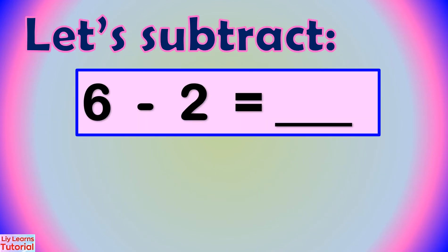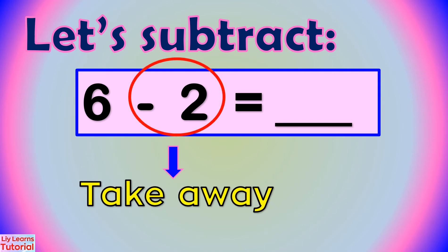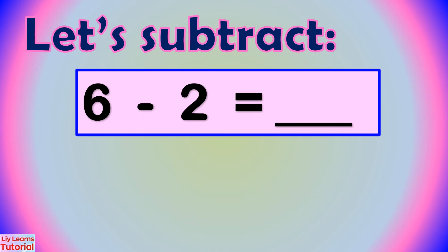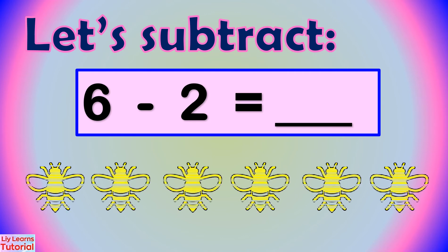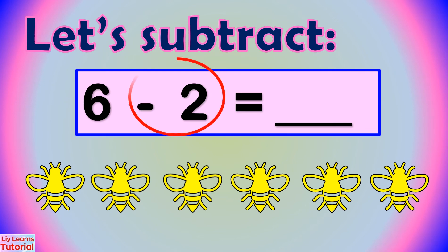Let's subtract 6 minus 2. Minus means take away 2 or remove 2. We can solve this by using objects or pictures. From these 6 flies, we'll take away 2. So we cross out 2 flies.